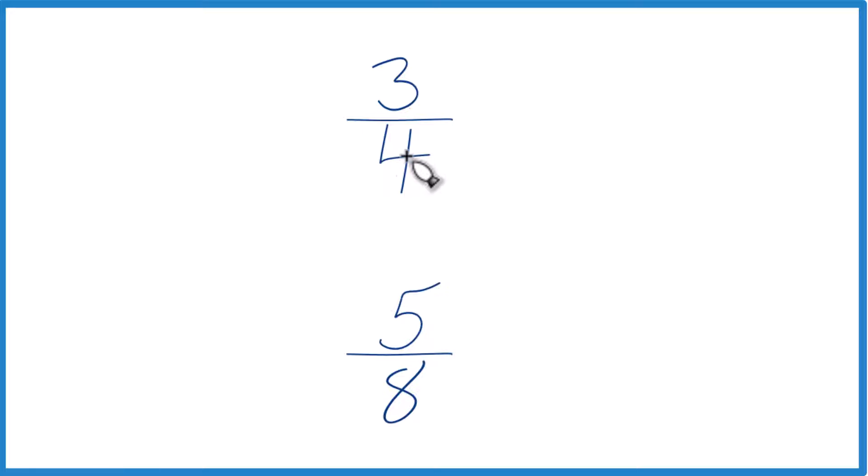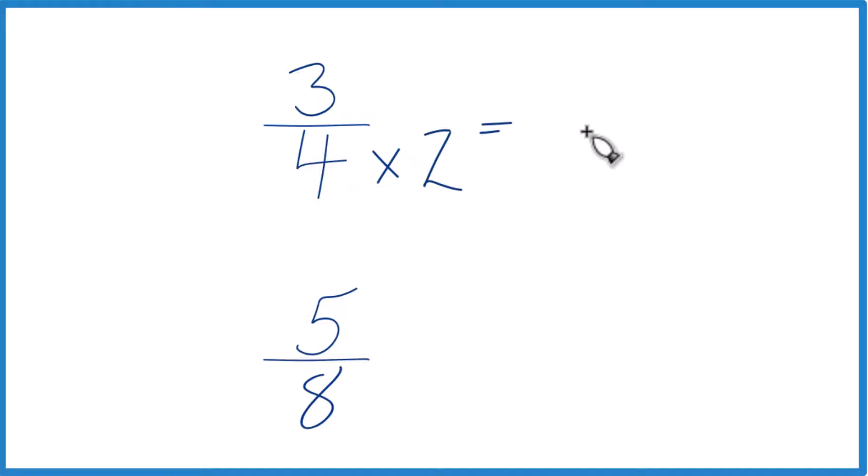Let's do this. How about four times two? Because four times two equals eight. Down here we already have eight, so let's just keep this as five-eighths.